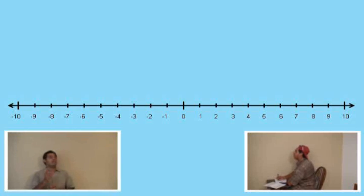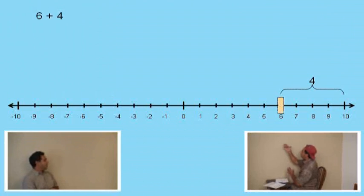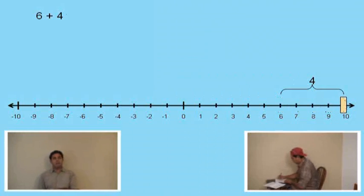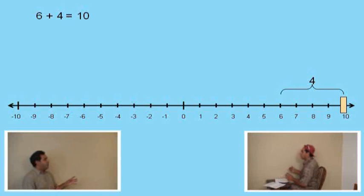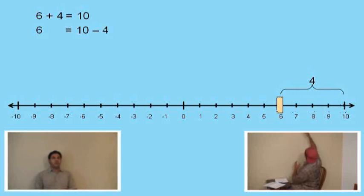Okay, Charlie, let's start with 6 plus 4. What is 6 plus 4? 10. Very good. It is 10. Now, Charlie, what number do you subtract from 10 to get 6? 4. Very good. It is 4. Okay.